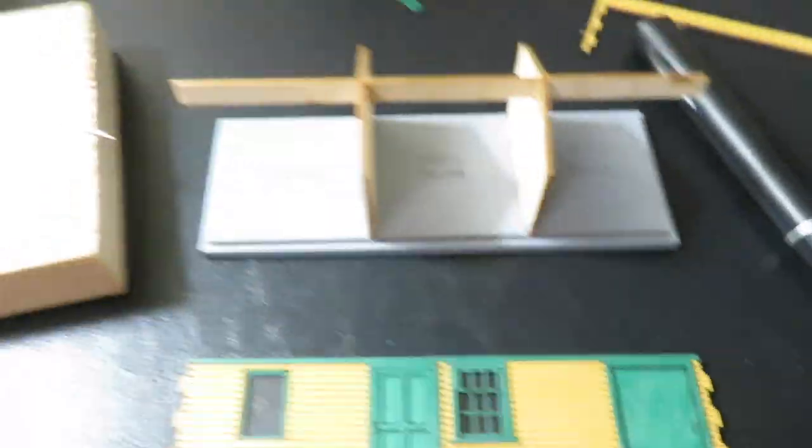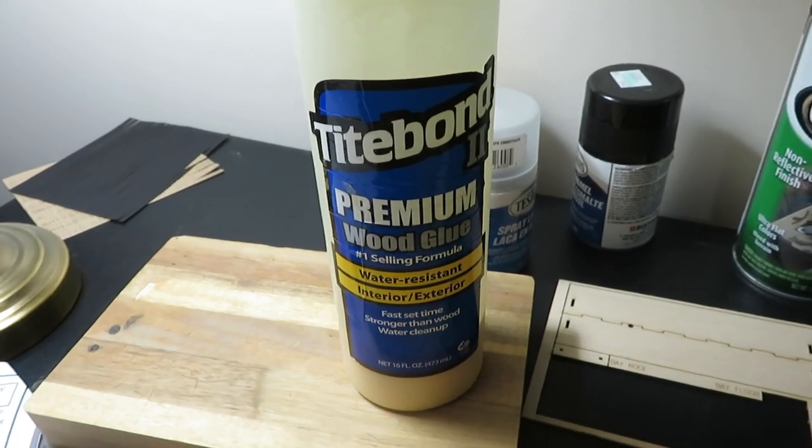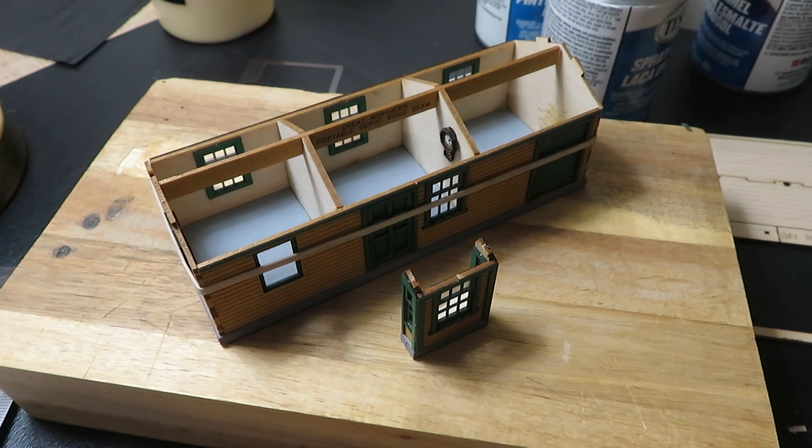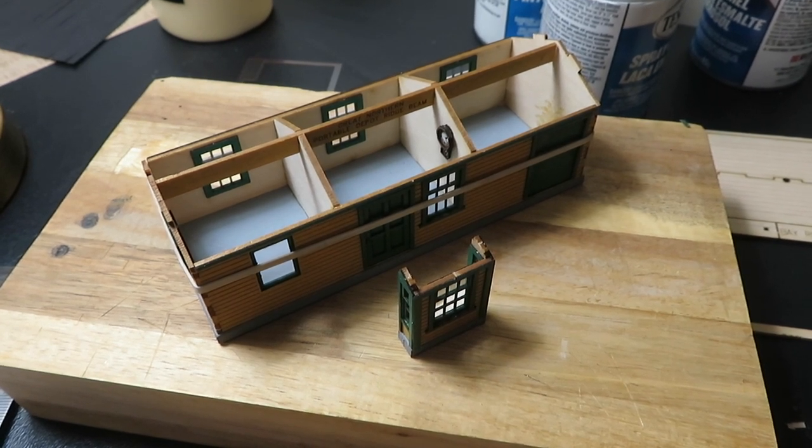For assembly, I'm just using tight bond wood glue. The walls are all glued on. I got them all held together with a rubber band, so now I just need to let the glue dry.